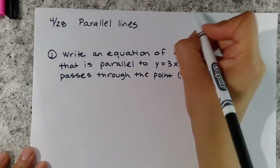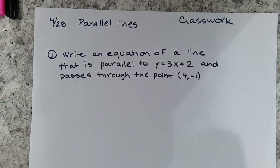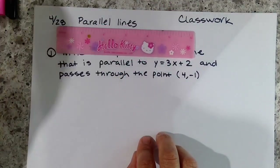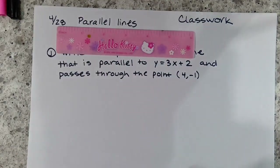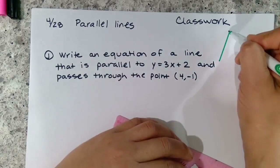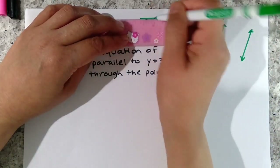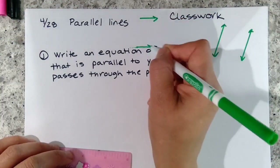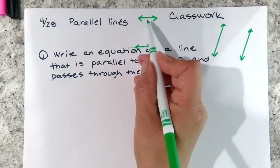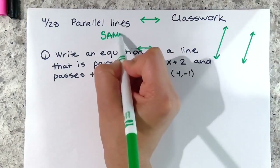For classwork today we're going to talk about parallel lines. You know what they are — parallel lines are two lines that are parallel. Here is an example of two parallel lines; they are increasing at the same rate. Two lines that are parallel have the same slope.